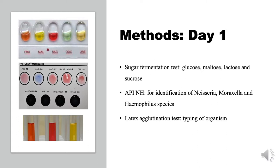Further identification can be obtained by performing a sugar fermentation test for glucose, maltose, lactose, and sucrose, or an API-NH, which provides a direct identification of Neisseria, Moraxella, and Haemophilus species. A rapid latex agglutination test is also useful in identifying the specific antigen associated with the disease. The latex particles will agglutinate in the presence of a sufficient homologous antigen.